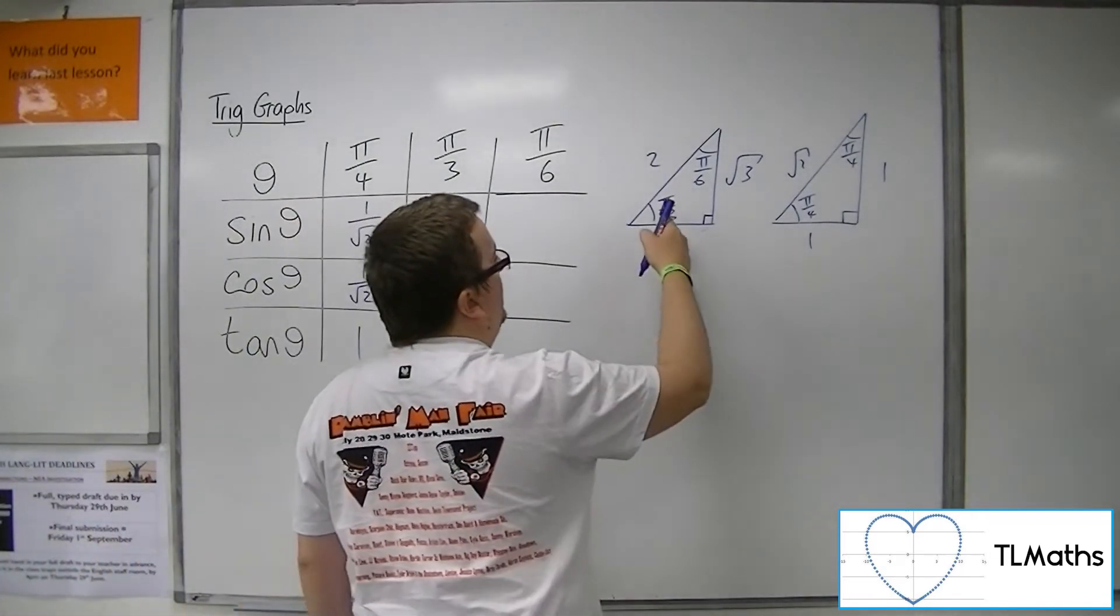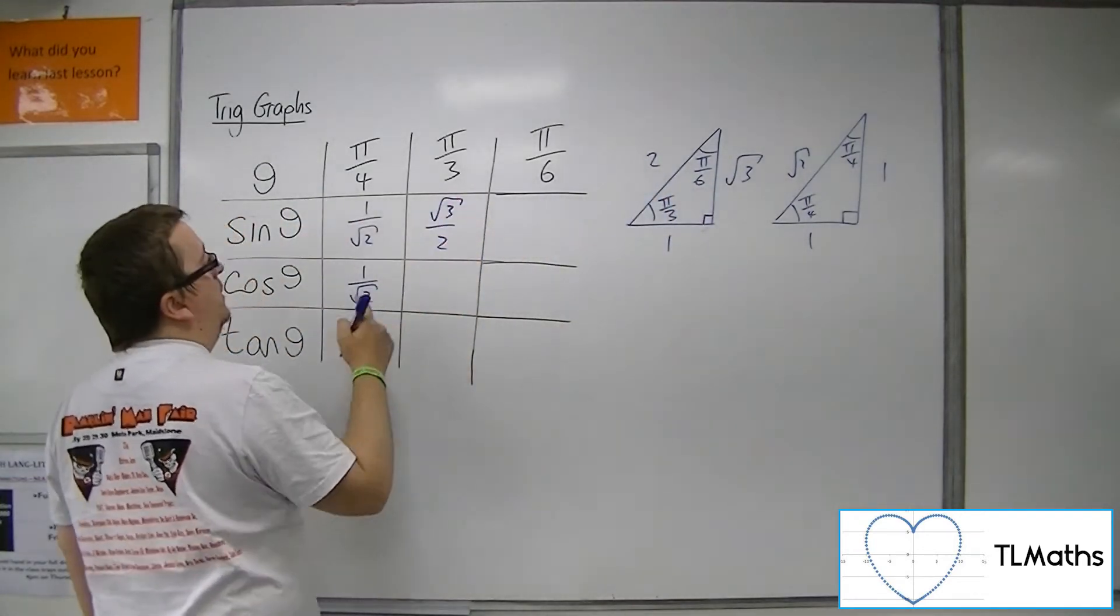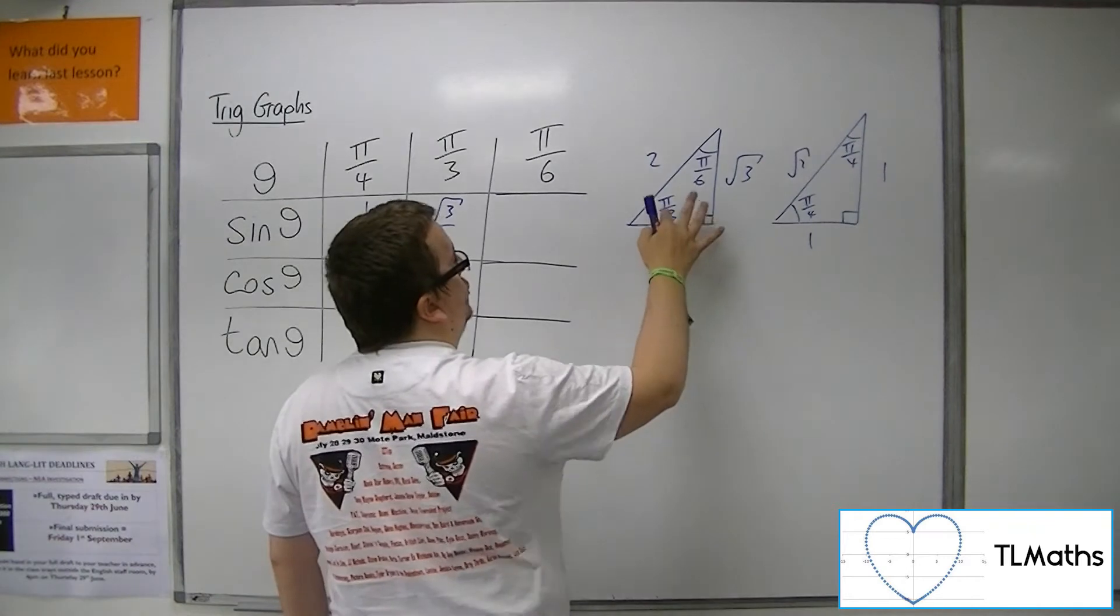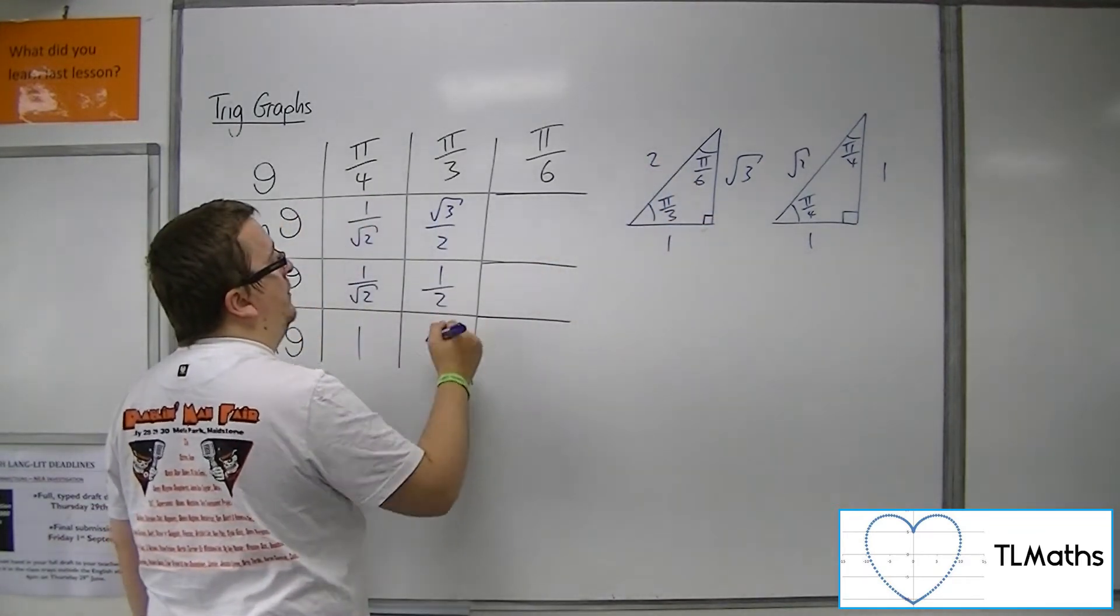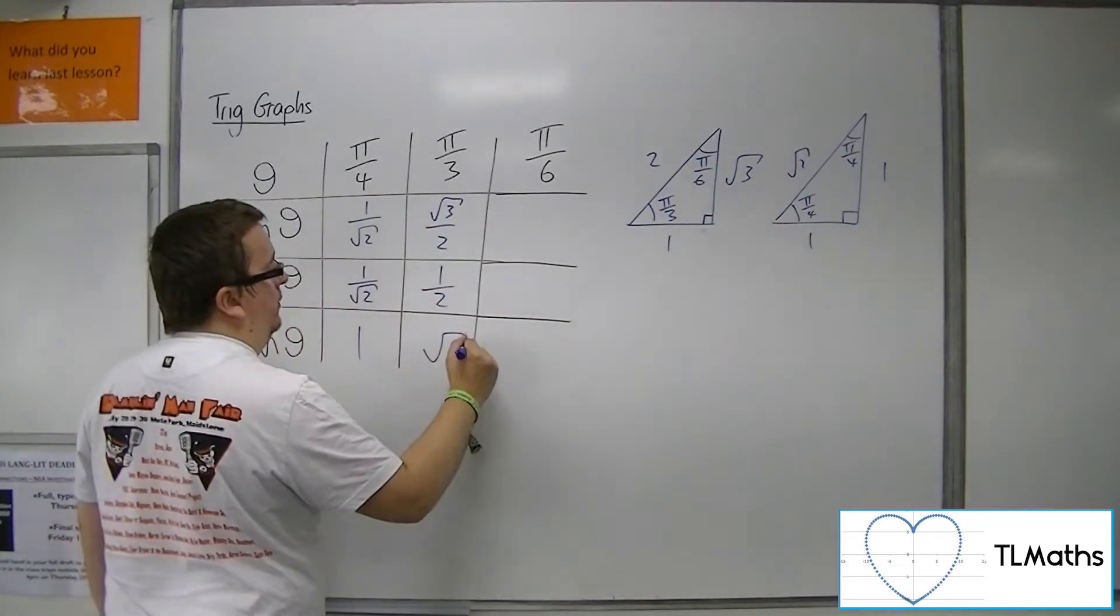Well, sine of pi over 3, there's pi over 3, is opposite over hypotenuse, so root 3 over 2. Cos of pi over 3 is adjacent over hypotenuse, so 1 over 2. Tan of pi over 3 is root 3 over 1, so just root 3.